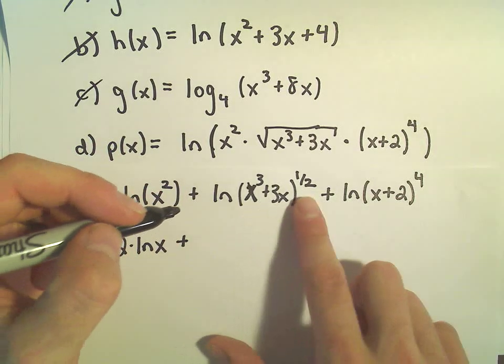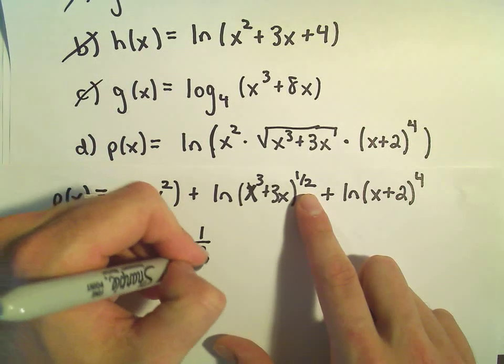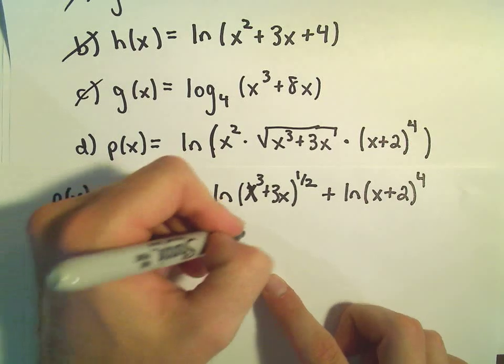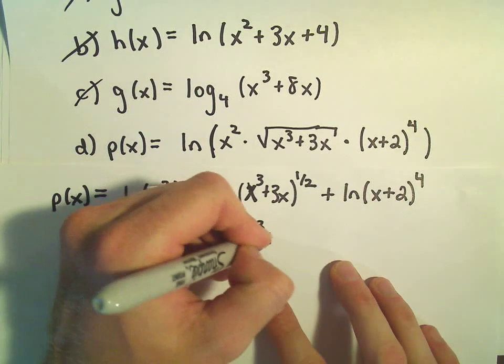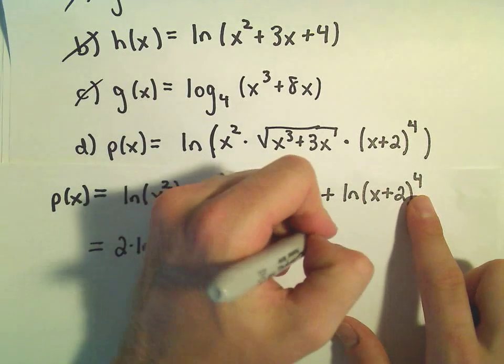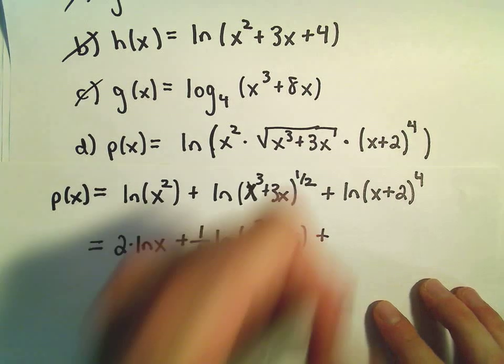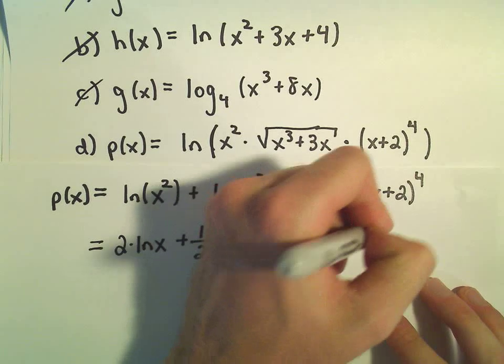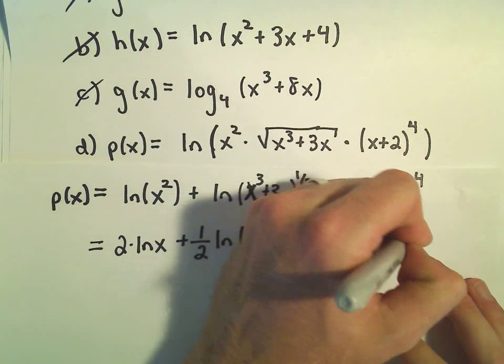I can write what was a square root. I can pull that exponent of 1 half out front. And then we have ln of x cubed plus 3x left over. And then the same thing. We've got this stuff being raised to the 4th power. So let's bring that out front. And we'll have 4 times ln of x plus 2.